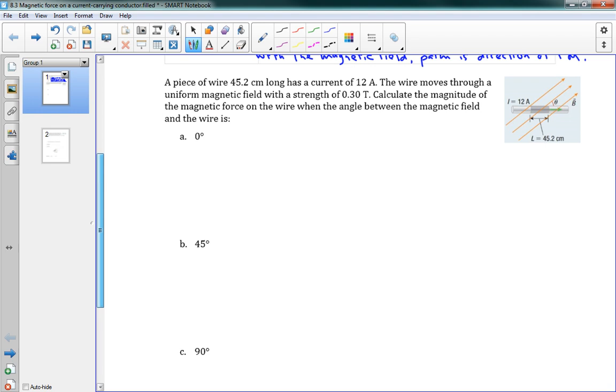Well, our equation here is fm is equal to ILB sine theta. And let's see, we've got our current is 12. The length of the wire is 0.452 meters. And b, b is 0.3. Sine, and our angle here is 0 degrees. And you might see this and say, well, I didn't have to actually put in any of those numbers because the sine of 0 is 0. So this whole thing comes out to a force of 0. So 0 newtons, that's our answer here.